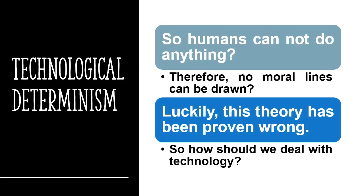If inferred correctly, technological determinism implies that humans have no control over technological development, and therefore no ethical guidelines can be developed to ensure the ethical development of technology.